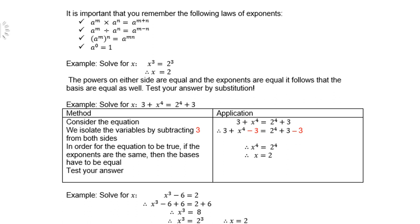Let's look at the next example. Solve for x: 3 plus x to the power of 4 equals 2 to the power of 4 plus 3. Consider the equation. Isolate the variables by subtracting 3 from both sides. Why? Because I want to get rid of 3 on the left-hand side. Then I'm left with x to the power of 4 equals 2 to the power of 4. And there you are. Exponents are the same, so therefore the bases are the same.